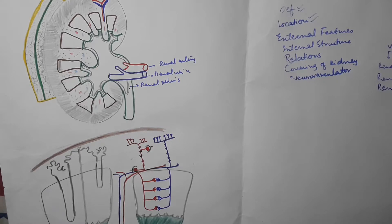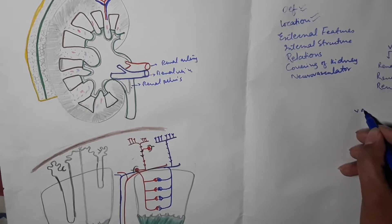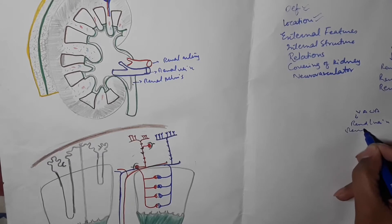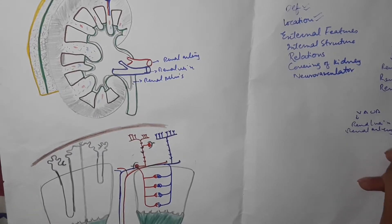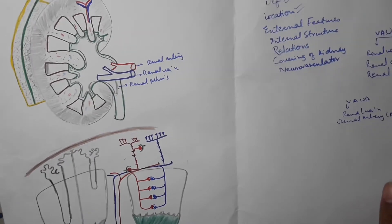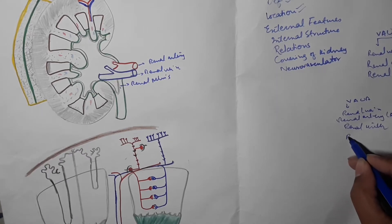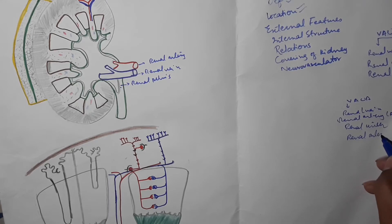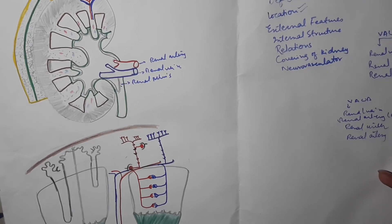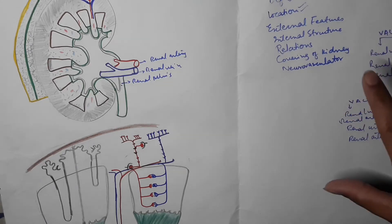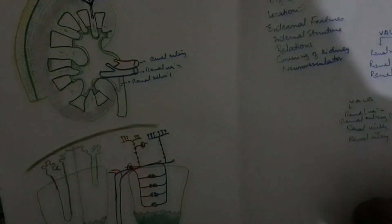Occasionally, one branch of the renal artery passes behind the ureter, so the order can appear as: renal vein, then renal artery anterior branch, then renal ureter, then renal artery posterior branch. Sometimes the structures are present in this variant order. This concludes the external features of the kidney.